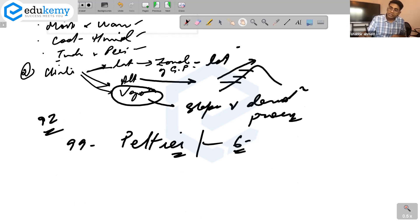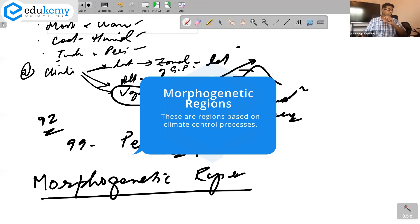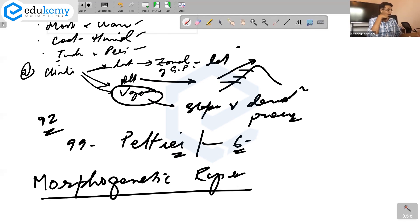You should also know this concept called morphogenetic regions. These are regions based on climate control processes. The concept of morphogenetic or morphoclimatic regions is based on the concept that climatic geomorphology and each geomorphic process produces its own characteristic assemblage of landforms. Then we have the ideas of Schotty with the ideas of Büdel, page 98, first two paragraphs.